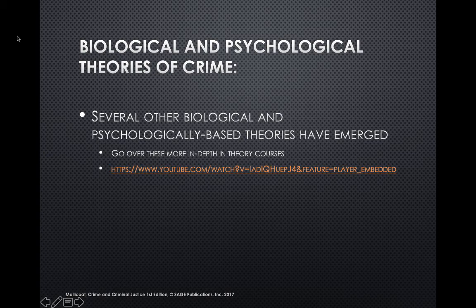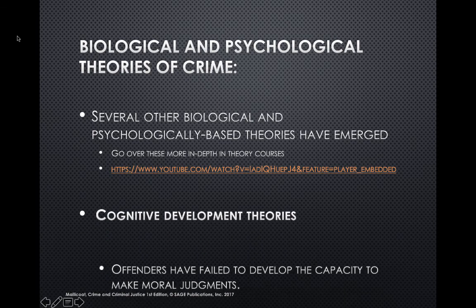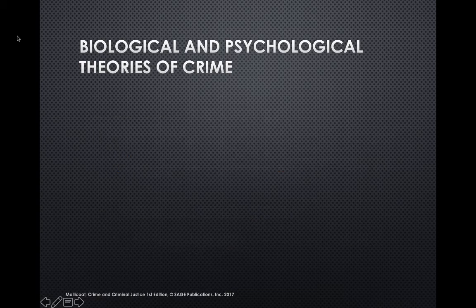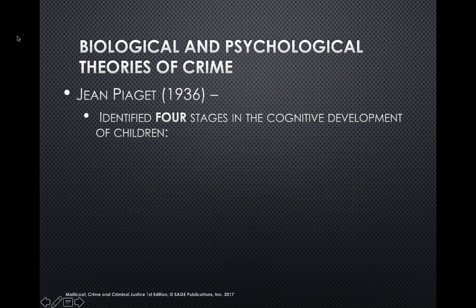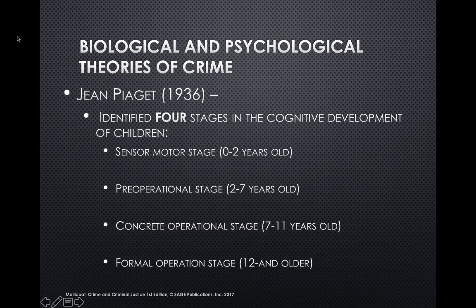Several biological and psychological based theories have emerged. Cognitive developmental theories say that offenders have failed to develop the capacity to make moral judgments. Jean Piaget identified four stages in cognitive development: the sensorimotor stage, birth to two years old; the pre-operational stage, two to seven years; the concrete operational stage, seven to eleven years; and the formal operational stage, twelve years and older.